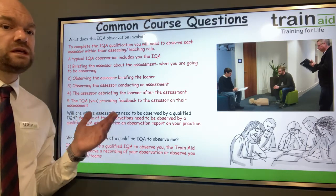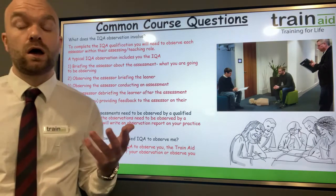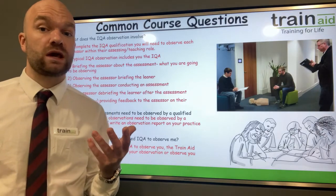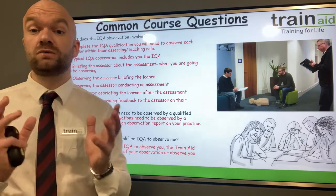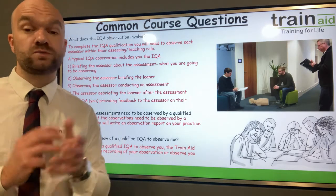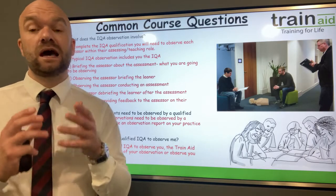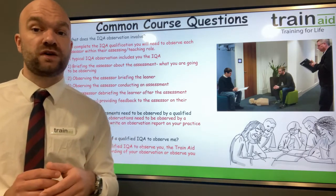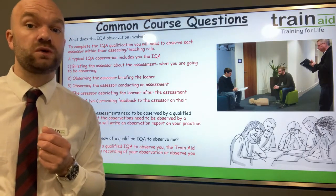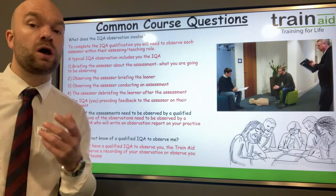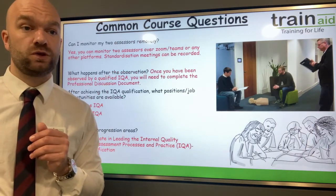What do I do if I do not know a qualified IQA? You will need to be observed by a qualified IQA, but if you don't know someone who can observe you, don't worry — one of the team from TrainAid can observe you. They will write up an observation report and also complete a professional discussion with you. So if you haven't got a qualified IQA, someone from the TrainAid team can help.